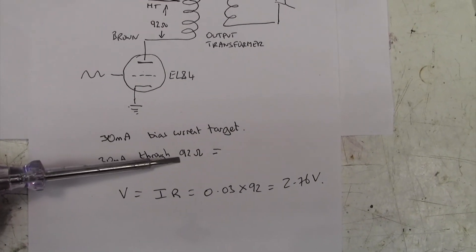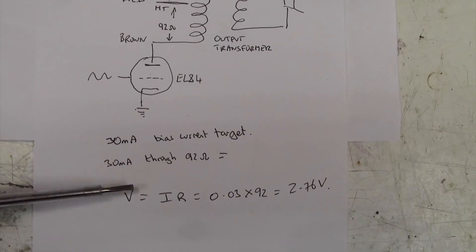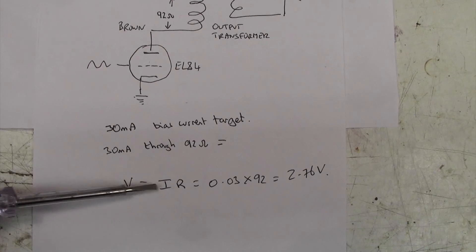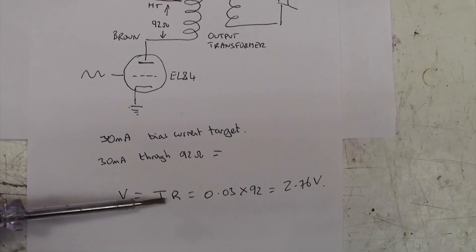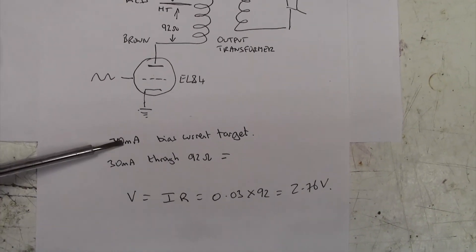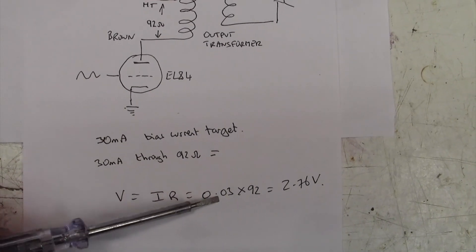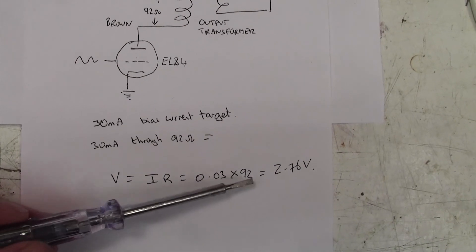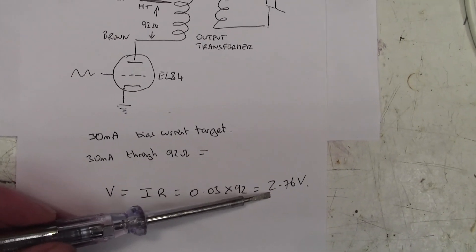I think I'm going to aim for a 30 milliamp bias current when we finally bias this amplifier. 30 milliamps through 92 ohms. Well, using Ohm's law, V equals IR, voltage is current times resistance. We just plug in the numbers. Current is 30 milliamps, which is 0.03 of an amp. Resistance, as we said, is 92 ohms. Out comes 2.76 volts.